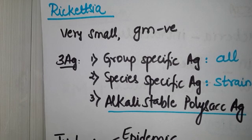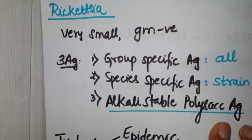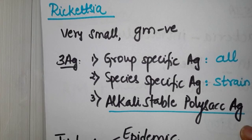One is the species specific antigen which is strain specific, few for Rickettsia, few for Orientia. This becomes very important when we discuss about Weil-Felix reaction. For Weil-Felix reaction is the third one, that is your alkali stable polysaccharide antigen.